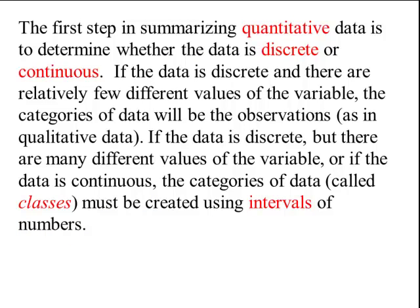The first step in summarizing quantitative data is to determine if the data is discrete or continuous. If the data is discrete with relatively few values, the categories will be the observations, as in qualitative data. If the data is discrete with many values, or if the data is continuous, categories called classes will be created using intervals of numbers.